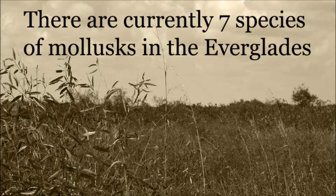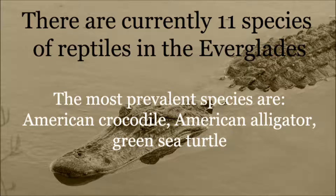The mollusks group has 7 members, all of which are shells. The animals in this group primarily feed on dead organisms. The reptiles group has 11 members, the most prevalent of which are the American crocodile, the American alligator, and the green sea turtle. The animals in this group feed primarily on fish or mammals.